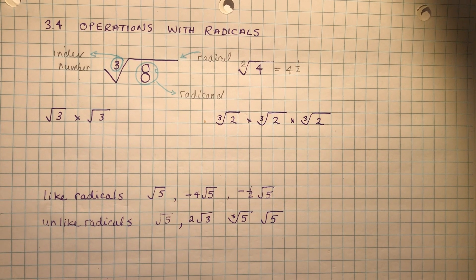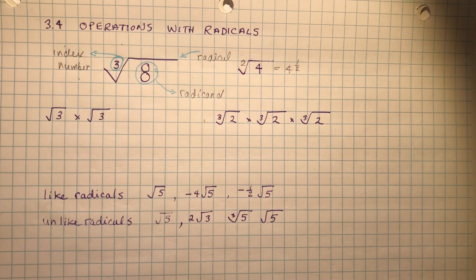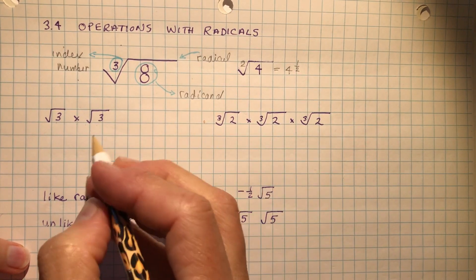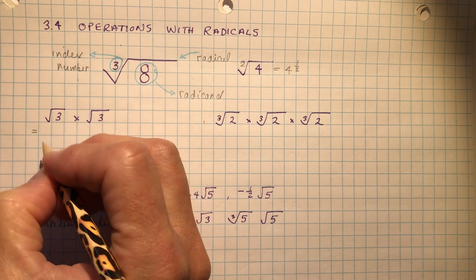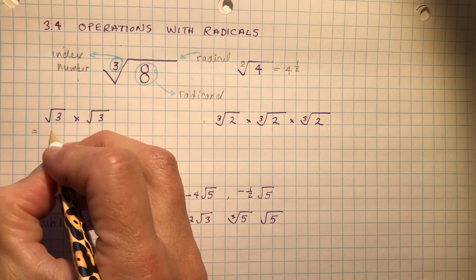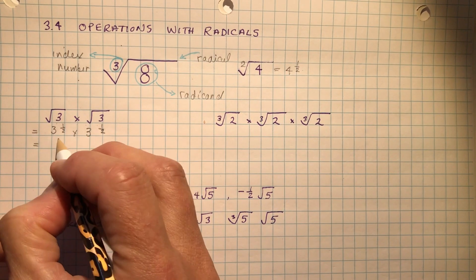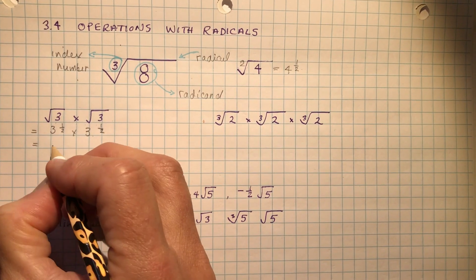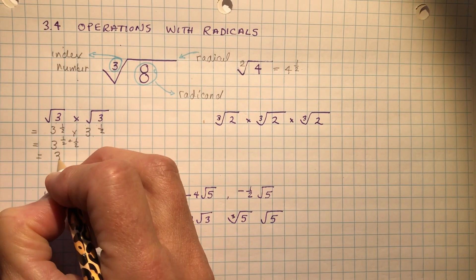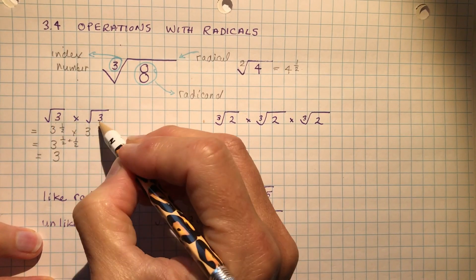So four to the one-half power is the same as the square root of four. Now, how do we multiply, divide, and add radicals, and what are like and unlike radicals? Let's look at root three times root three. This would be three to the one-half power times three to the one-half power. When multiplying with the same base, you add the exponents, giving you three to the power of one-half plus one-half, which is one — so the answer is three.